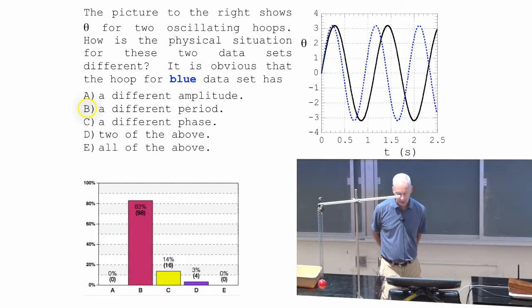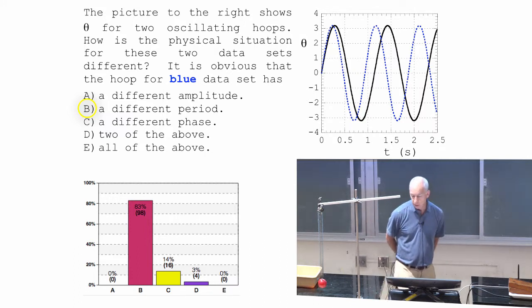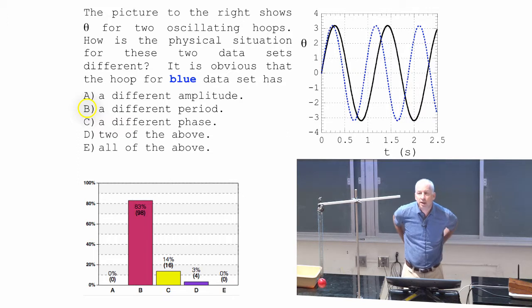Different period, which is a shorter period? The blue one? The blue one takes less time to go through one complete oscillation, shorter period.